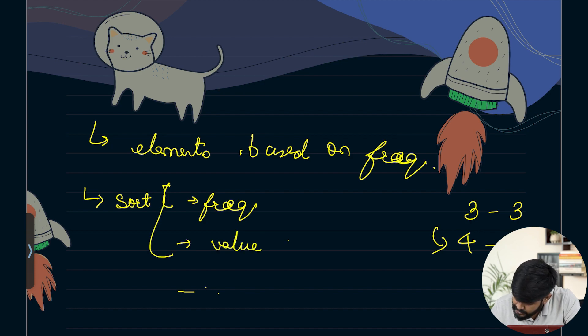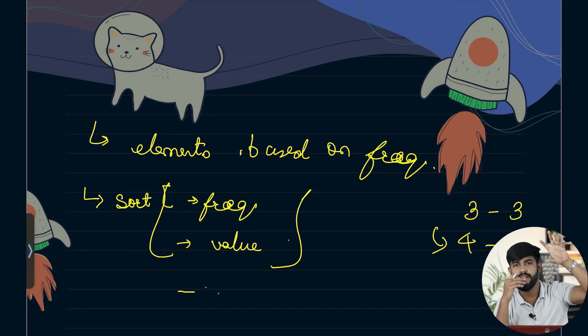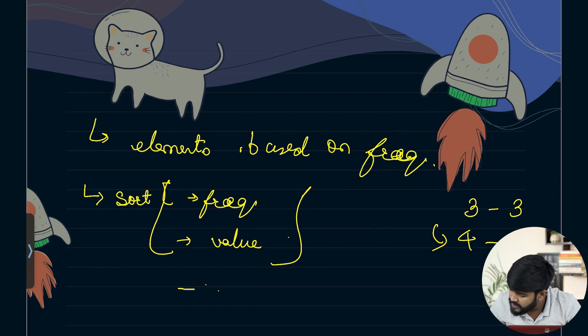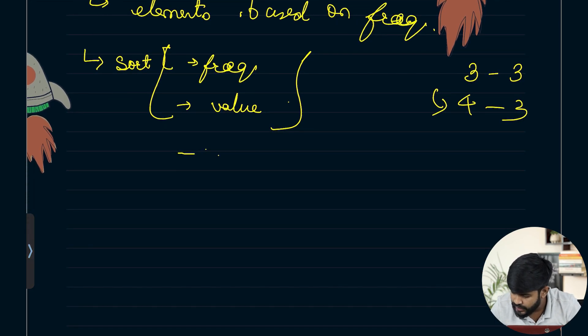We need to sort on the basis of 2 things not just 1. So the very first thing we can do is we can simply keep a count of all the elements. Like this number 1 has appeared 2 times, number 3 has appeared 3 times, number 4 has appeared 4 times. And we can make a pair.